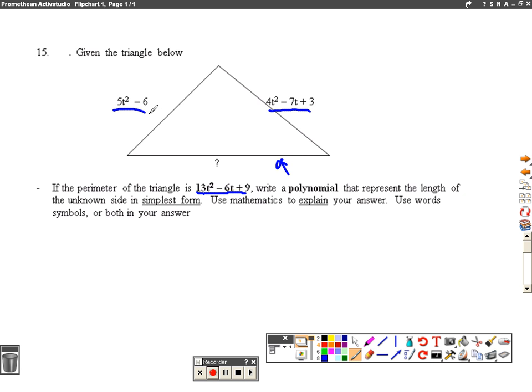So the first thing we want to do is add together the sides we know. We're going to say 5t squared minus 6 plus 4t squared minus 7t plus 3. And we're going to combine our like terms. So we're going to have 9t squared minus 7t minus 3.